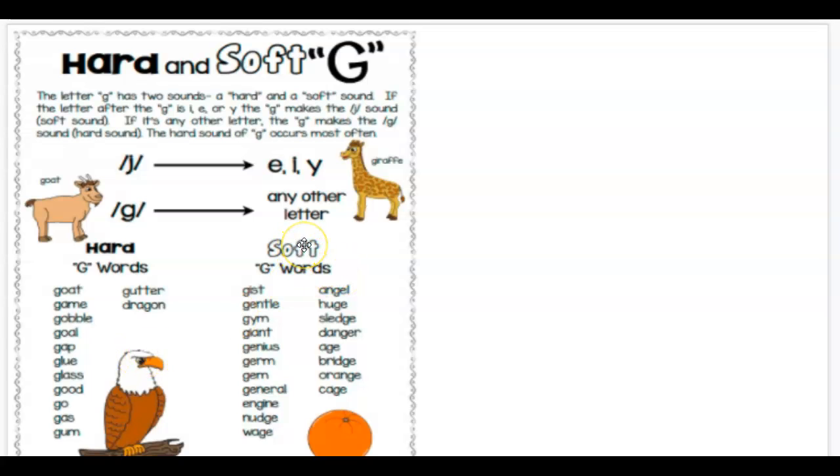And our soft G makes the J sound, like gist, gentle, gym, giant, germs.